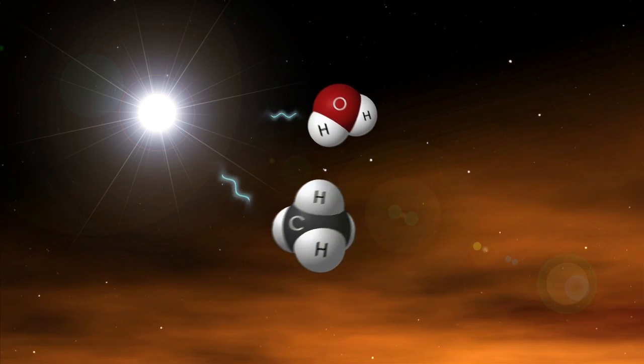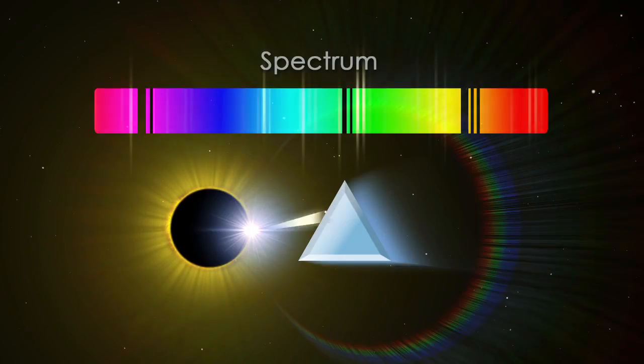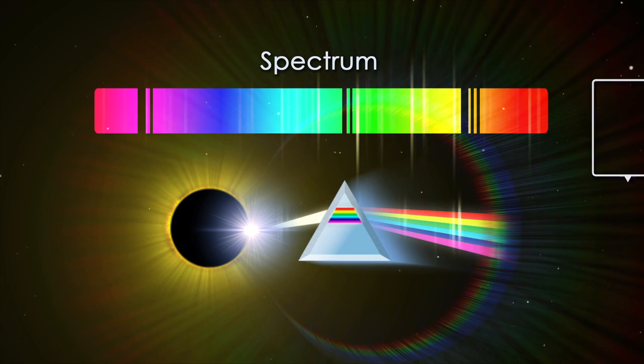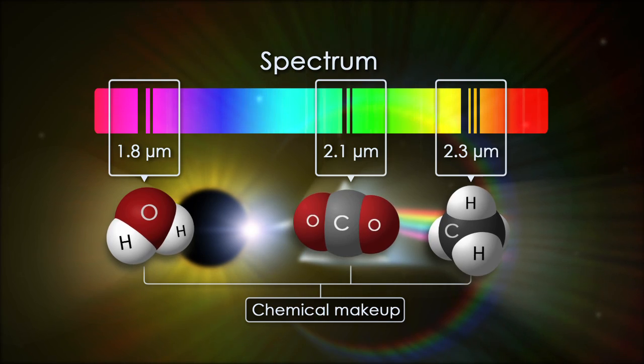Because each molecule absorbs distinct wavelengths, astronomers spread the star's light into its spectrum of colors to see which wavelengths have been absorbed. The dark absorption bands act as molecular fingerprints, revealing the atmosphere's chemical makeup.